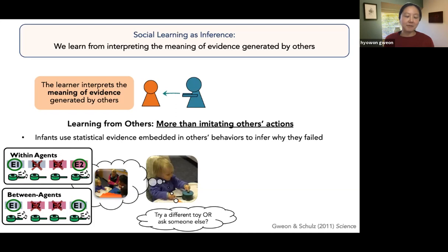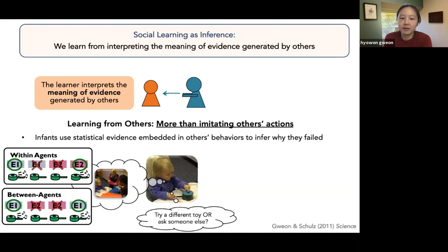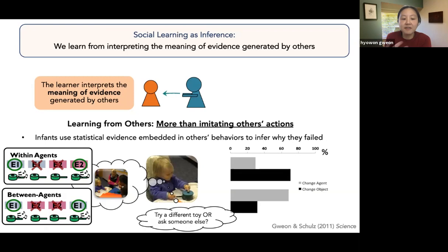This kind of evidence makes children interpret their own failures differently. If I'm in the between-agents condition and I can't make the toy work — it turns out some people were able to make it go and others weren't — perhaps it is me who is causing the failure, so I might ask another person for help. What we have shown is that children do different things given failures: they will always try to imitate and try multiple times, but what they do afterwards depends on what they've seen. Depending on the statistical evidence, they either try to change the object — trying a different toy — or change the agent — asking a person to help activate the toy.